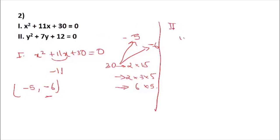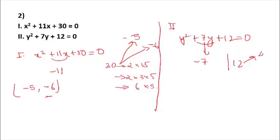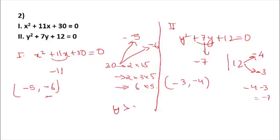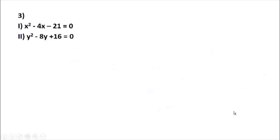Second equation: y² + 7y + 12 = 0. Take the negative of 7, giving −7. Break 12 into 4 × 3 = 12; since 4 + 3 = 7, place negative signs: −4 and −3. So y = −3 and y = −4. Comparing all values of x (−6, −5) with y (−3, −4), y is always greater than x. Therefore x < y.